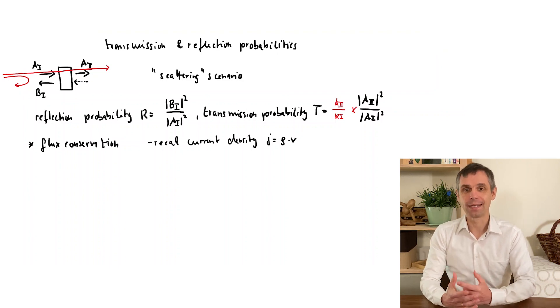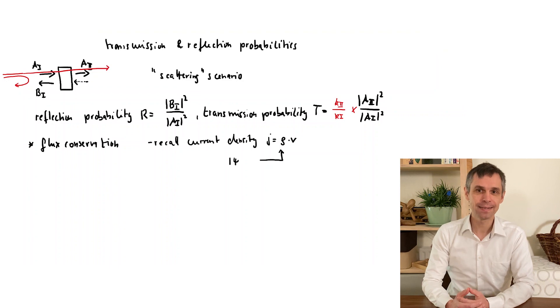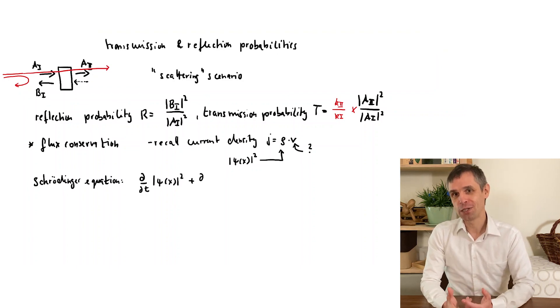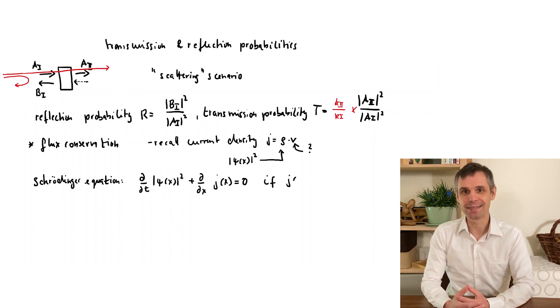Now, in our case, we can actually apply this to the probability density and then derive what we really mean by this current. And if we do so, we can rephrase this indeed as an ordinary continuity equation. And we arrive at a really interesting little formula for the current density.